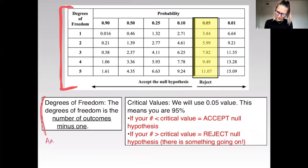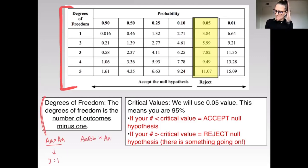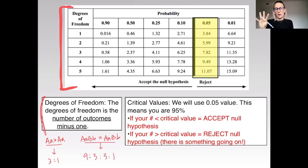For example, if we did this monohybrid cross, we expect two outcomes, so the degrees of freedom would be one. If we did this dihybrid cross, we expect a nine to three to three to one ratio, so we expect four different outcomes and the degrees of freedom would be three.